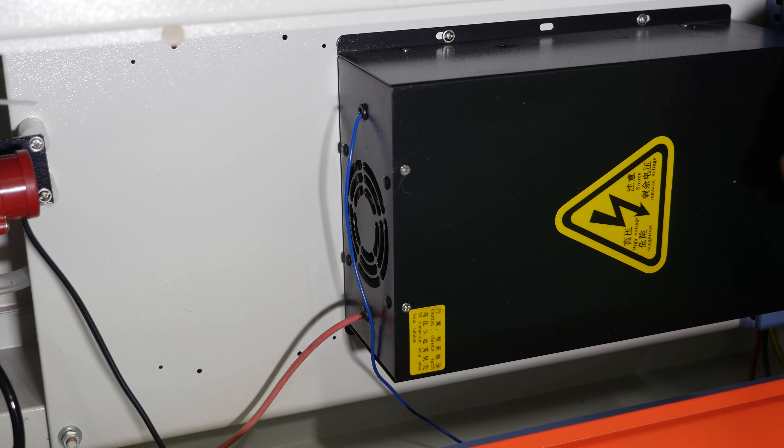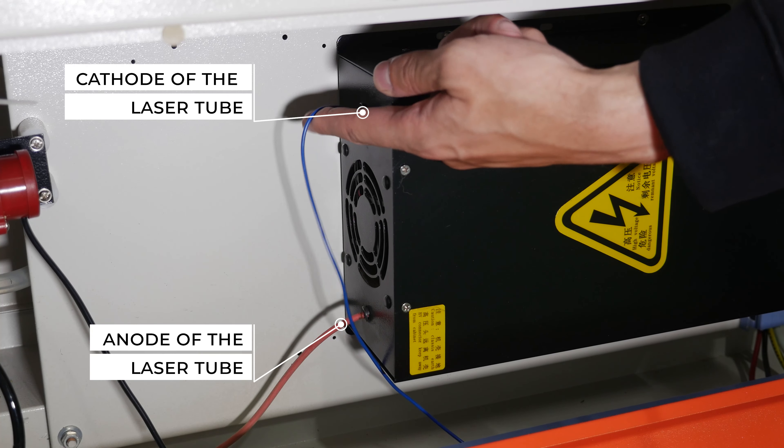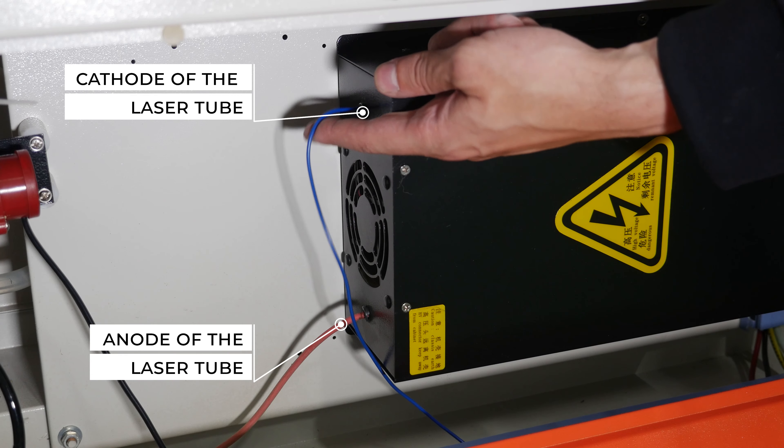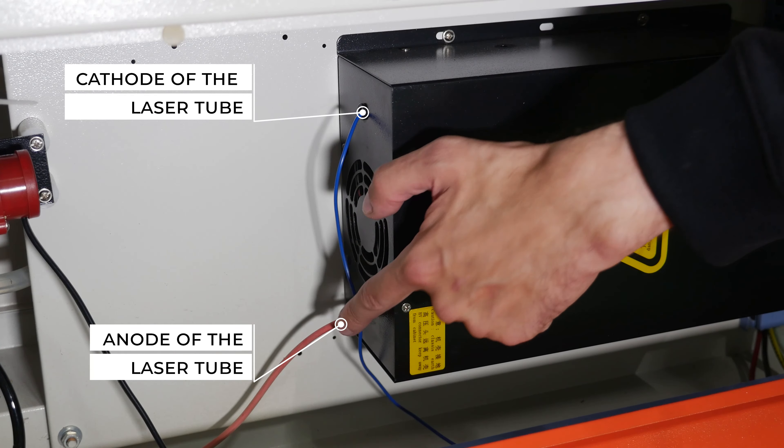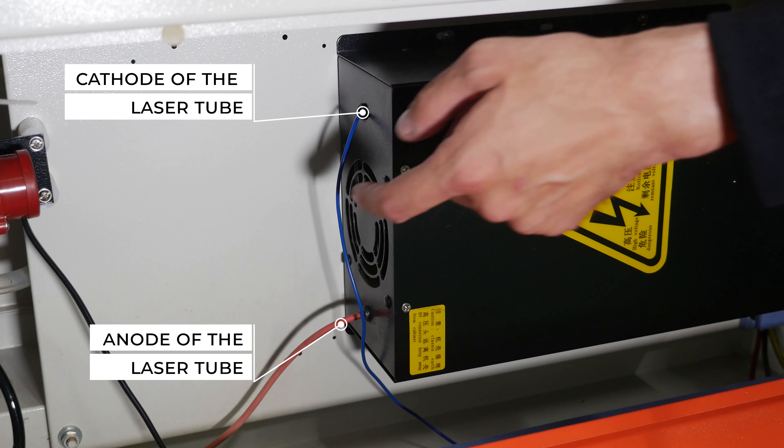There are two cables coming out from the left side of the high voltage unit. The first one is connected to the cathode of the laser tube and the second one, a high voltage cable, to the anode of the laser tube.